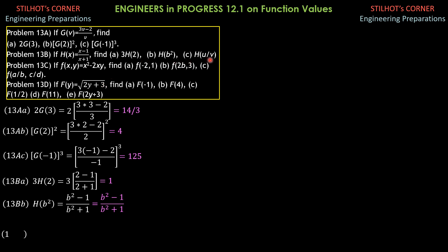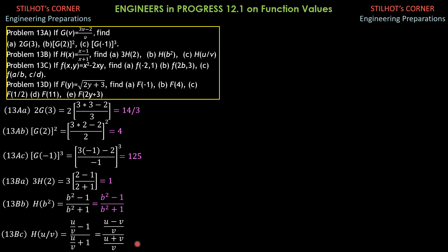For 13c, h(u/v): that is (u/v minus 1) all over (u/v plus 1). Simplifying, this is (u minus v)/v over (u plus v)/v. We can cancel v. Therefore, the final answer h(u/v) is (u minus v) over (u plus v).